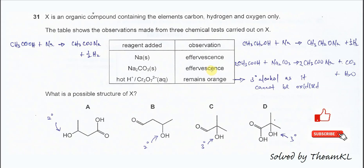Question 31. X is an organic compound with C, H and O only. The table shows the observations made from three chemical tests carried out on X.